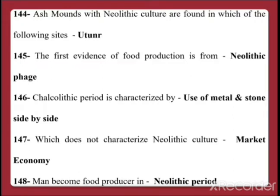Question 145: The first evidence of food production is from the Neolithic phase. Question 146: The Chalcolithic period is characterized by use of metal and stone side by side — the period is known for metal use but stone tools were also used alongside. Question 147: What does not characterize Neolithic culture is market economy — market economy had not developed during Neolithic times.